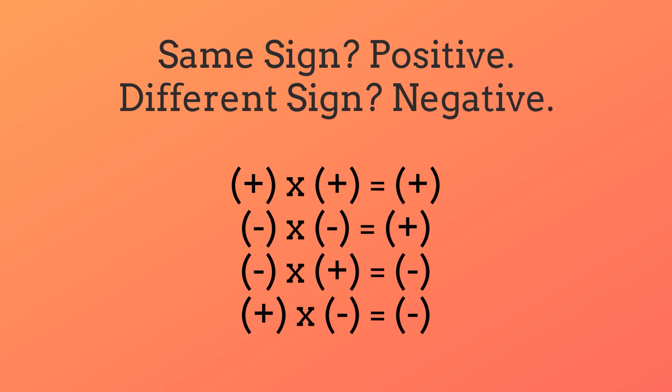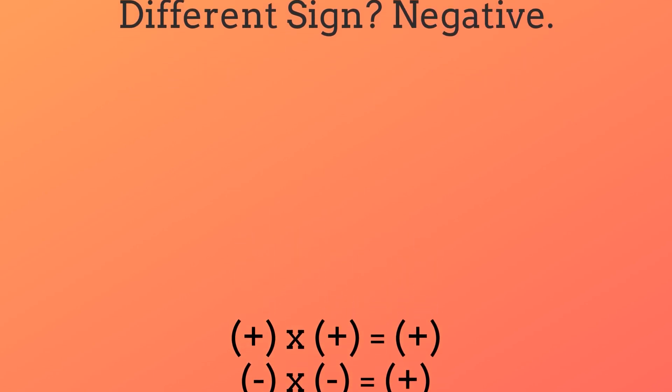If you had a negative times a positive, then your end result would be a negative, and if you had a positive times a negative, then your end result would be negative. So basically, if you have the same sign, then your answer would be positive, and if you have different signs, then your answer would be negative.